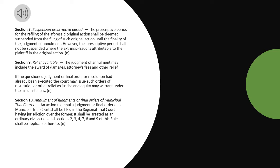Section 10, Annulment of Judgments or Final Orders of Municipal Trial Courts. An action to annul a judgment or final order of a municipal trial court shall be filed in the regional trial court having jurisdiction over the former. It shall be treated as an ordinary civil action and Sections 2, 3, 4, 7, 8, and 9 of this rule shall be applicable thereto.